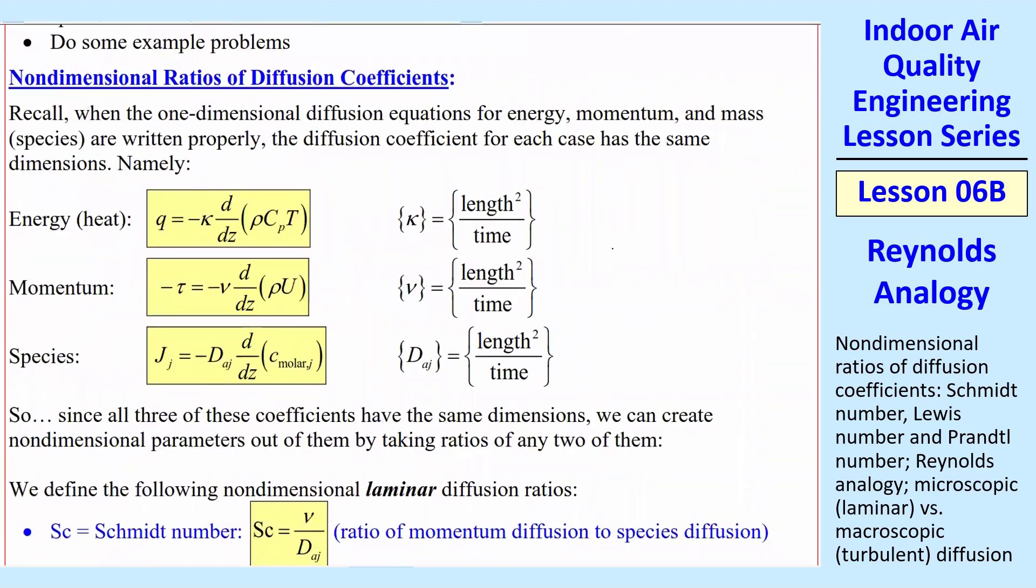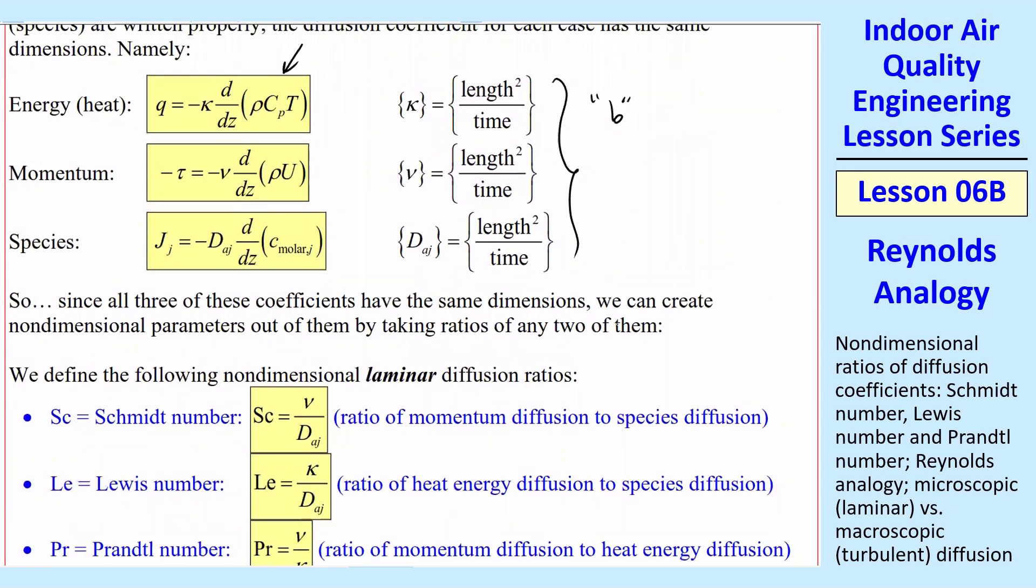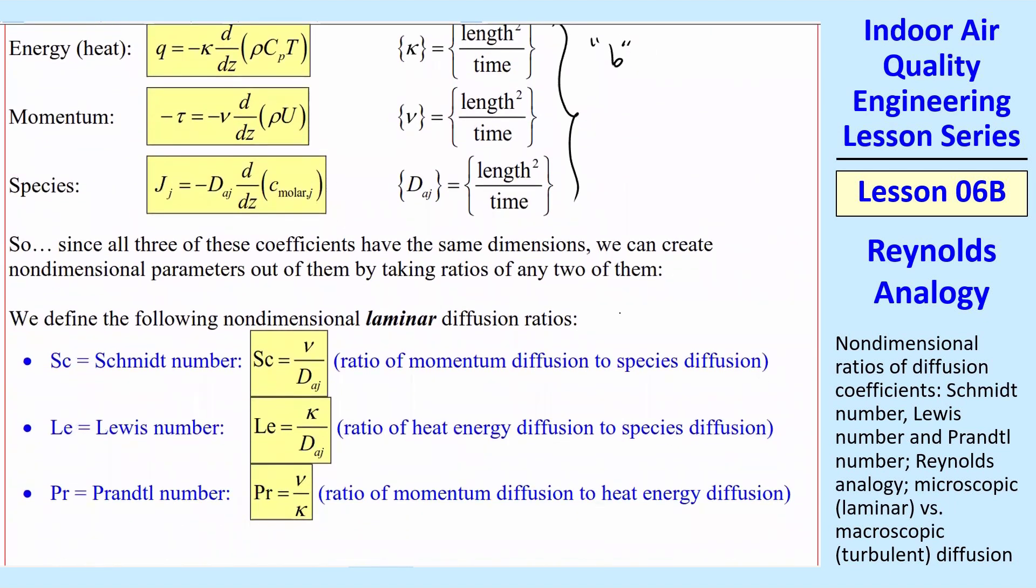Here's the energy, momentum, and species 1D diffusion equations, and all three of these guys here are our Bs in the diffusion equation. So these are the diffusion coefficients, kappa, nu, and dAj. They all have the same dimensions, as I mentioned before, and if you put them in the same units, like meters squared per second, we can make non-dimensional diffusion ratios from them.